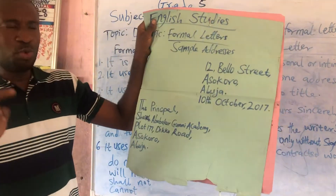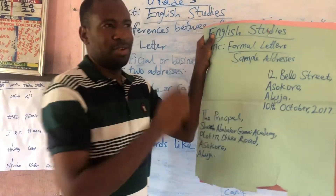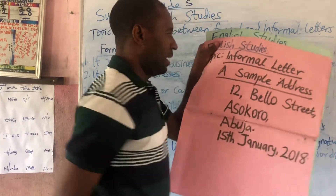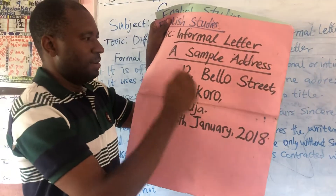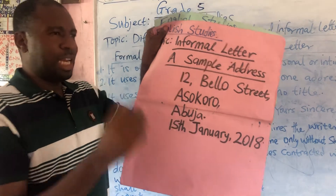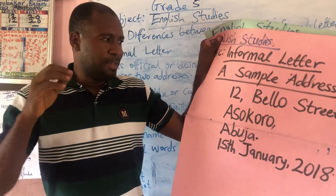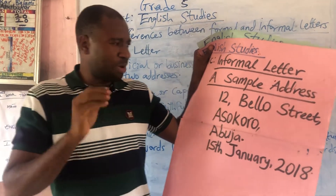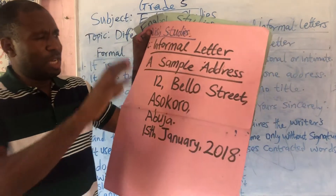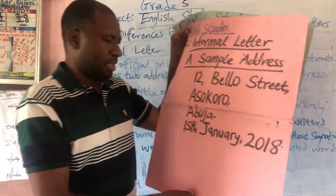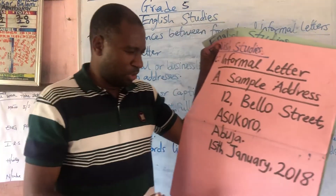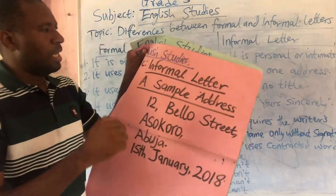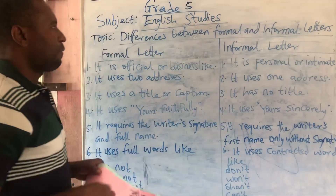So in a formal letter we have two addresses — the writer's address and the receiver's address. Now let's see a sample address of an informal letter. In an informal letter, you are expected to write only the writer's address. You are not expected to write the receiver's address, as it is assumed there is a close relationship between the writer and the receiver.